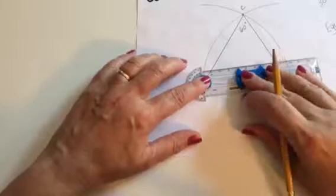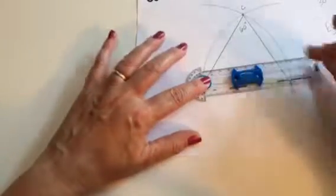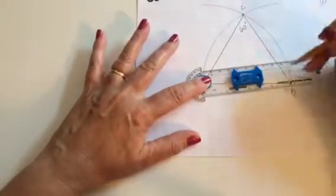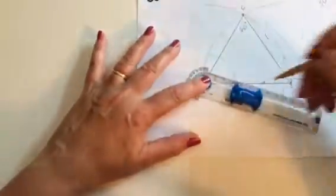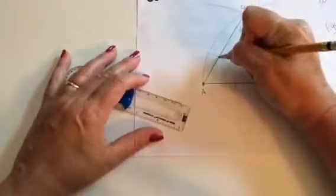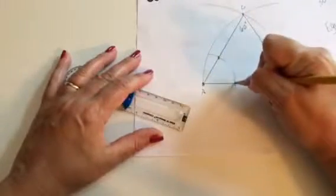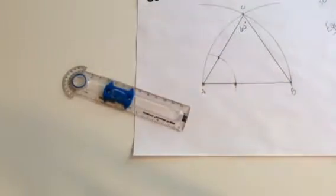We're going to put our window on A and open up randomly, not too far because you don't want to go past B. I'm going to swing an arc so that it intersects the sides AC and AB, and I'm going to mark those two points.